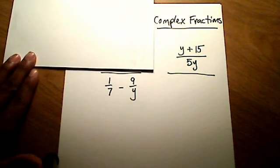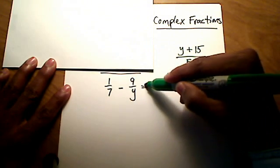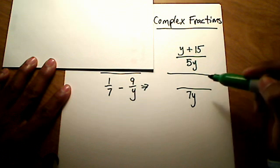This is, again, this is still the method, what the book calls method 1. I need to, if I'm going to add these two together, I need an LCD. In this case, it's going to be 7y.